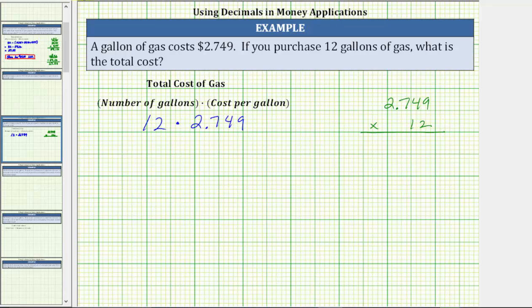Before we multiply, notice how 2.749 has three decimal places and 12 has zero decimal places. Because three plus zero is three, the product must contain three decimal places.